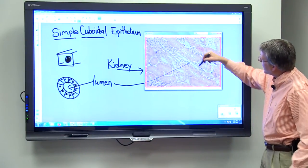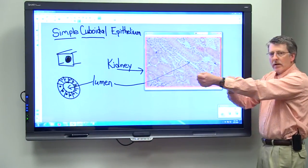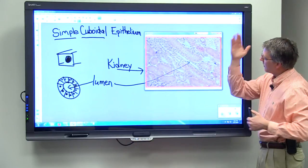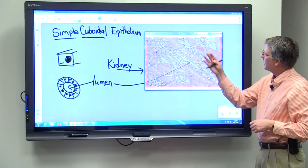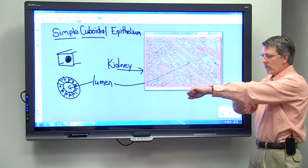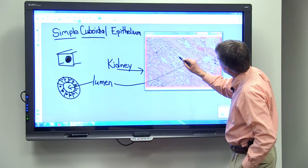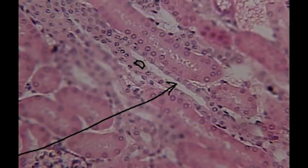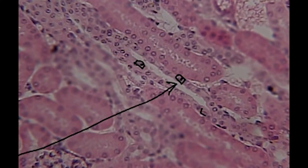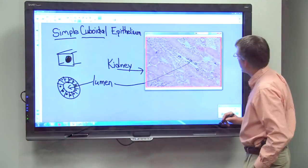This is a section of a tube that's running sort of longitudinally. When the microscope slide was made, it just so happened that the cut was running longitudinal to that particular tube. And you can see some of the cube-shaped cells that make up this particular tube in the kidney. So each of these are simple cuboidal epithelial cells.